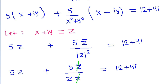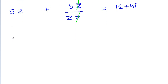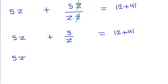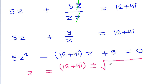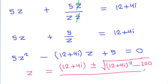The g-conjugate terms cancel, and we get 5g plus 5 divided by g equals 12 plus 4·iota. Multiplying through, we get 5g² minus (12 plus 4·iota)·g minus 5 equals 0. Applying the quadratic formula, g equals minus b, that is (12 plus 4·iota), plus or minus the square root of b² which is (12 plus 4·iota)² minus 4ac, where 4·times 5 times 5 is 100, all divided by 2a, which is 10.